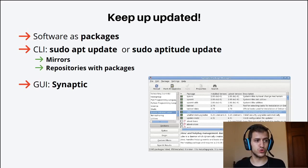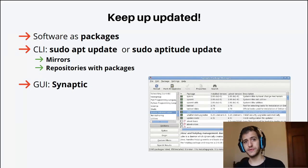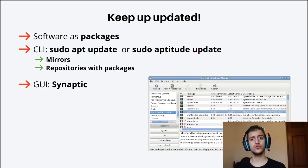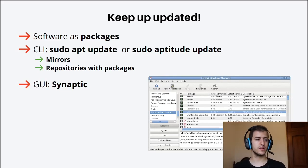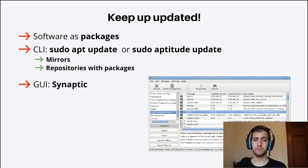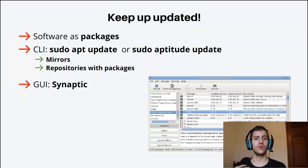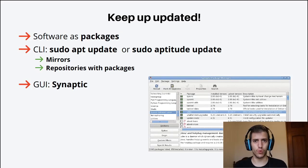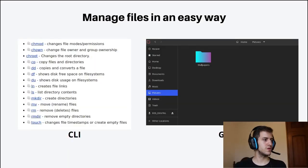Instead of the command line where you write 'sudo apt update,' you could also use the graphical tool called Synaptic. Synaptic is a graphical tool that lets you manage all these packages — it's like using the command line but graphically. Personally I prefer the command line because I feel I've got more control over what I'm doing, but you could also use the graphical tool if you want.